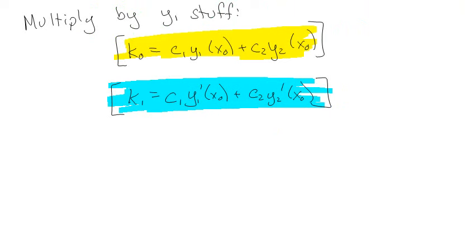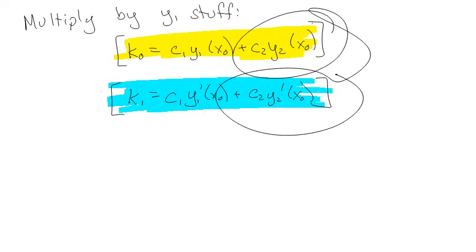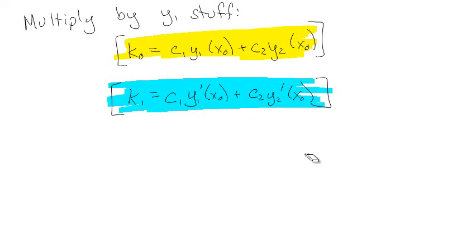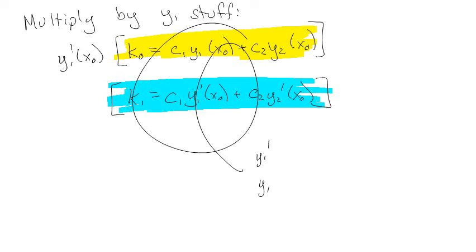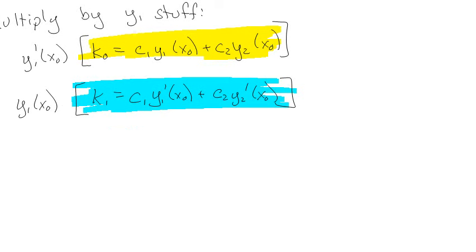So this is a really good opportunity to kind of figure this out on your own, so pause the video, go see if you can get this working. So this time maybe I want to multiply by y1 stuff. But remember what happened last time, when I multiplied by y2 prime and y2 regular, those two went away. So now if I want the c1s to go away, then the first one I want to multiply by y1 prime and the second one by y1 regular.